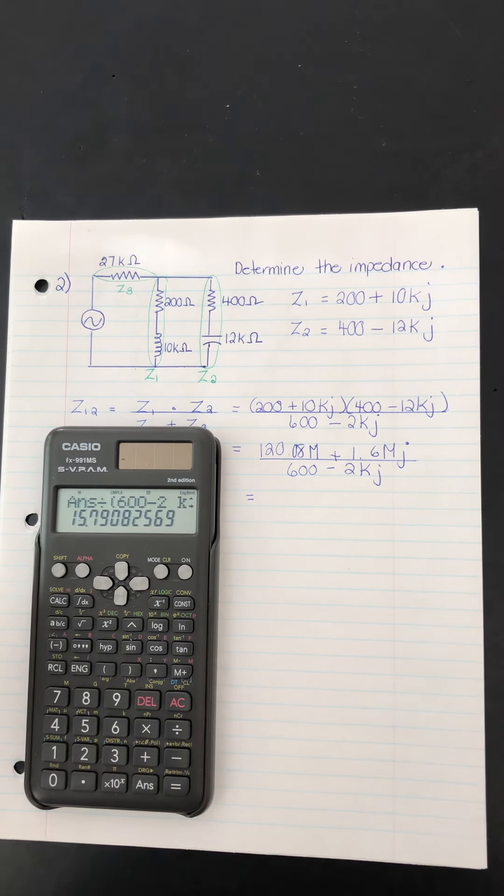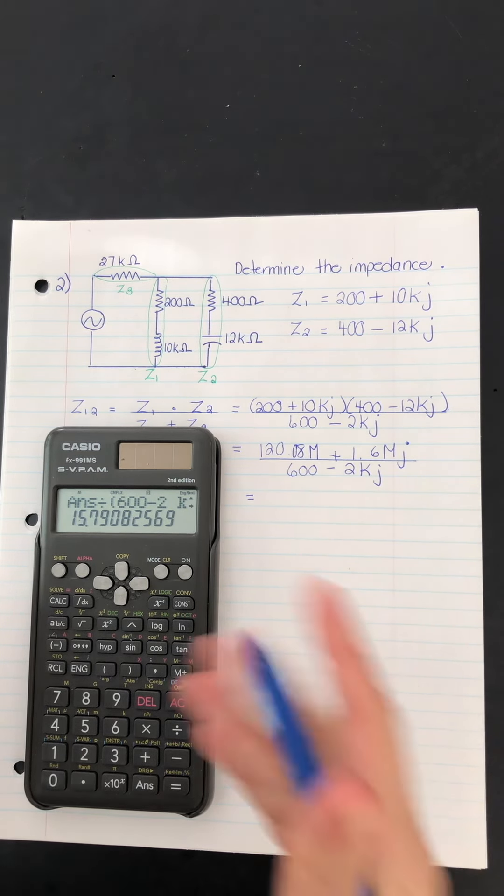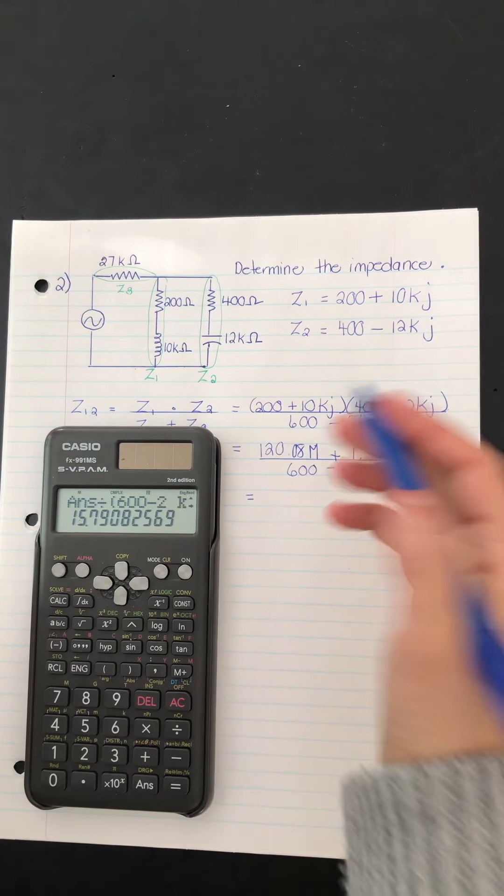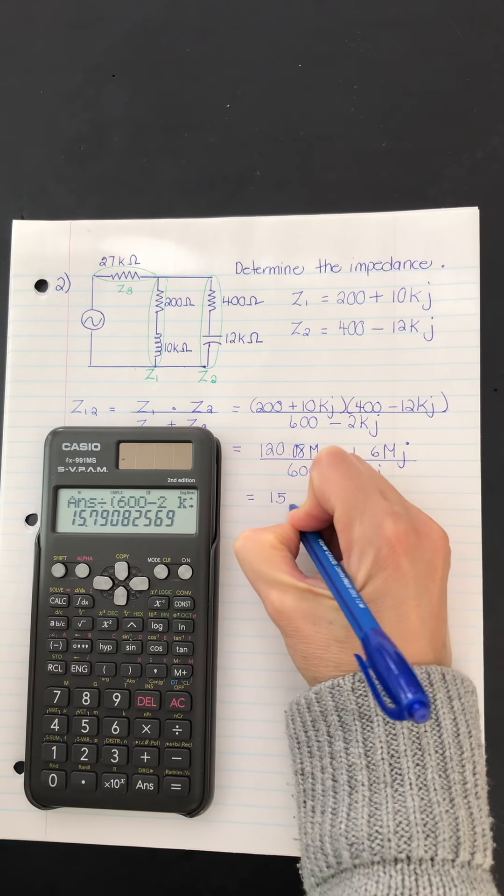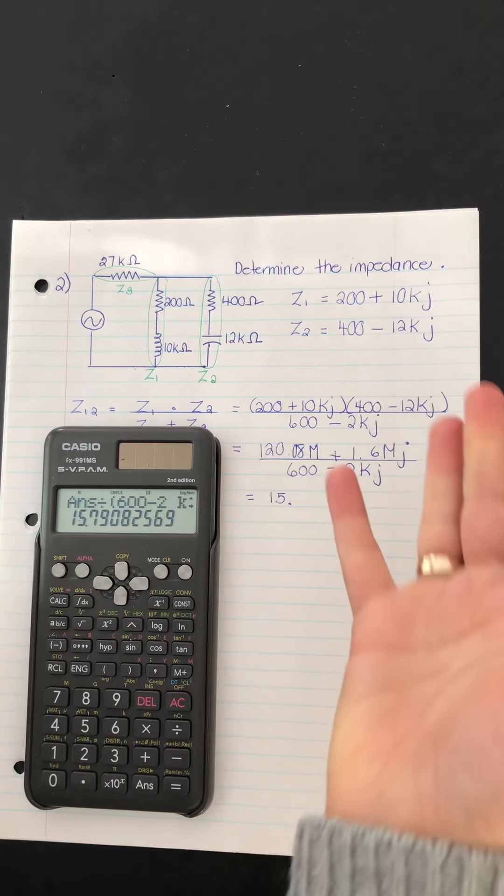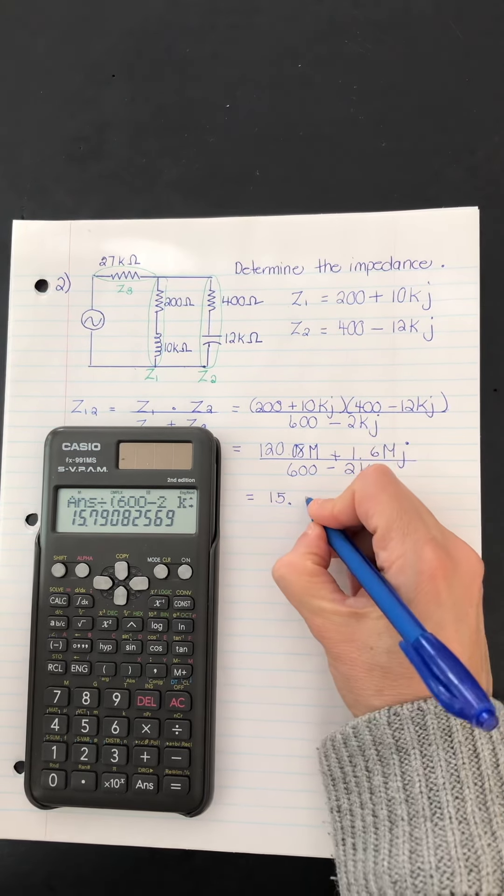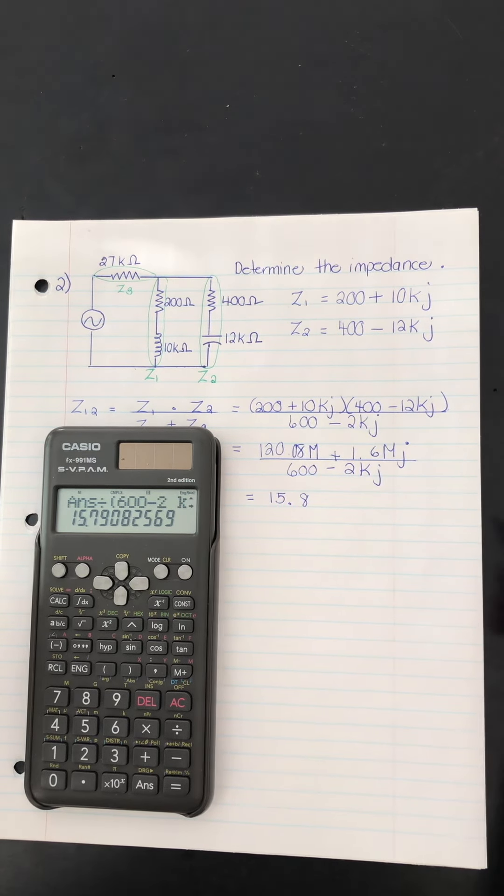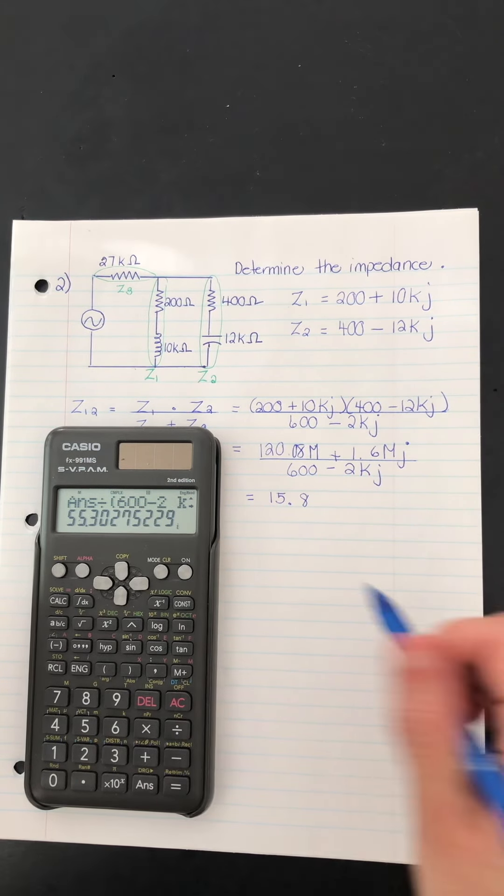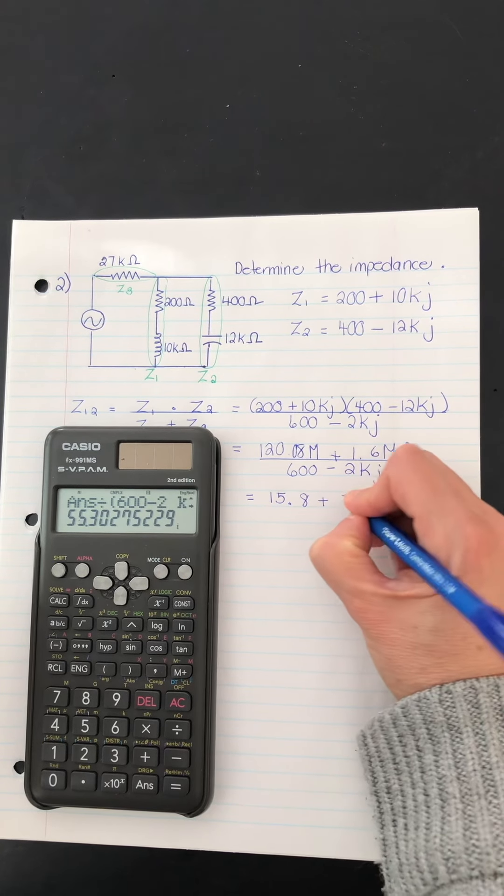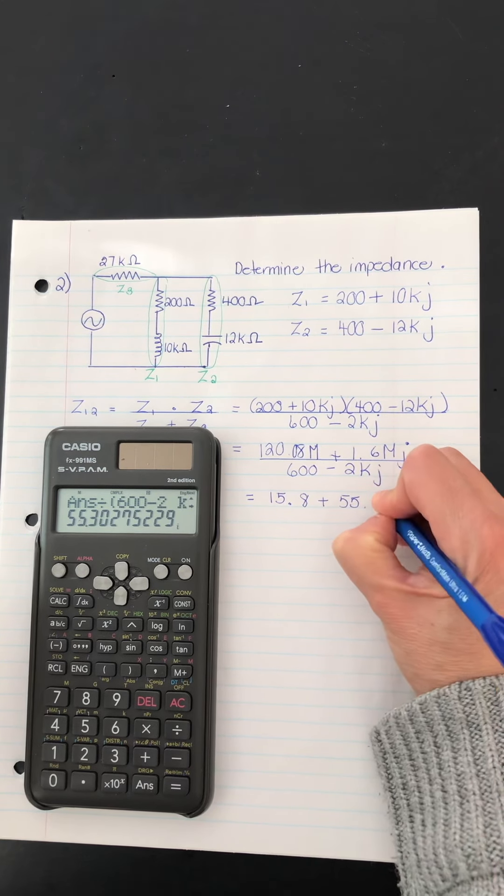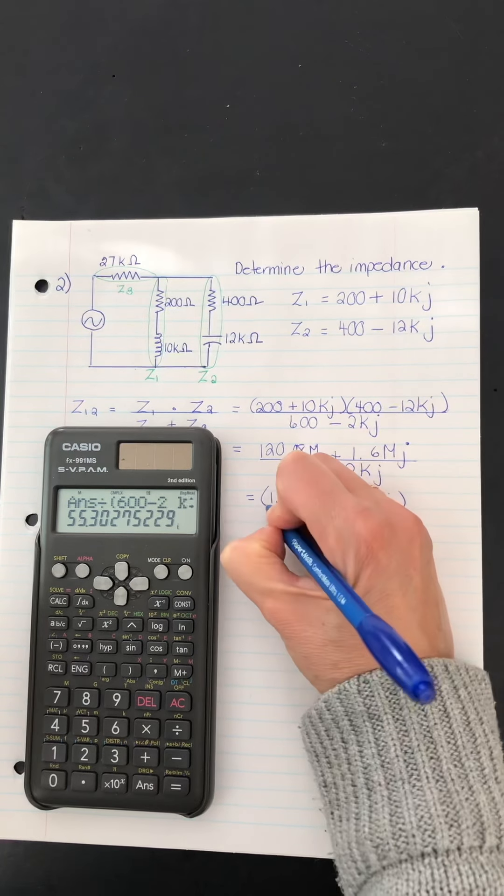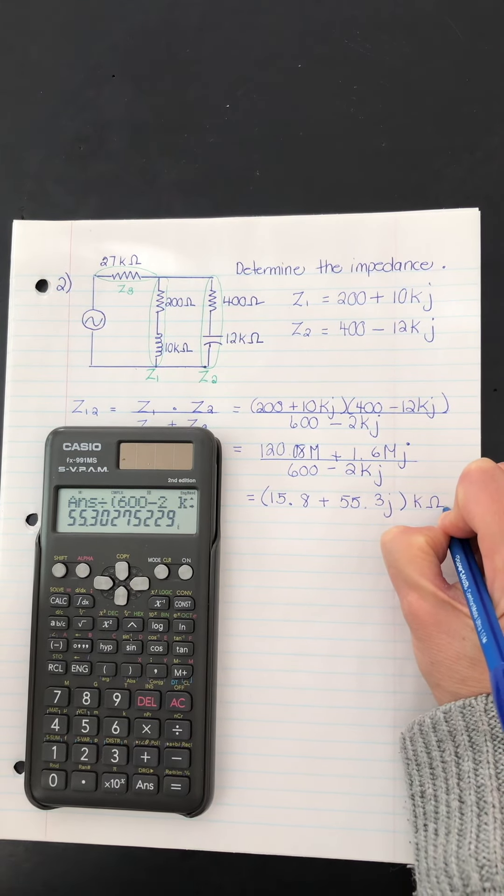So there we go. So it's 15.8-ish. And it's kilo, but the other number will also be in kilo. So shift equals, it's also in kilo, plus 55.3 J. So all of that is kilo ohms.